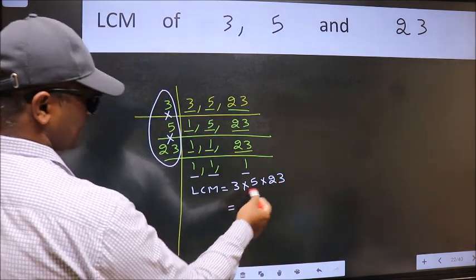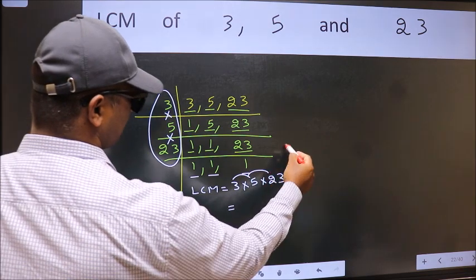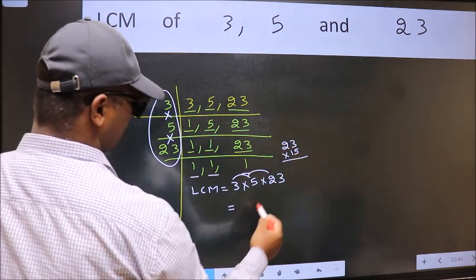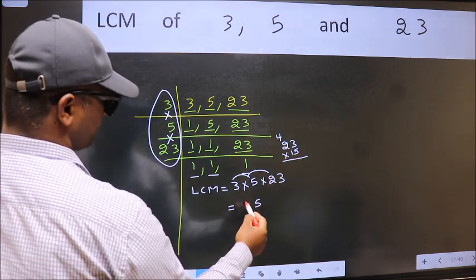Let us multiply these numbers. 3 into 5, 15 into 23. 15 times 3 is 45. 5, 4. 15 times 2 is 30 plus 4, 34.